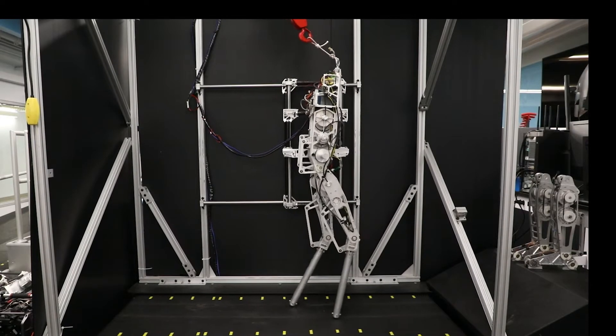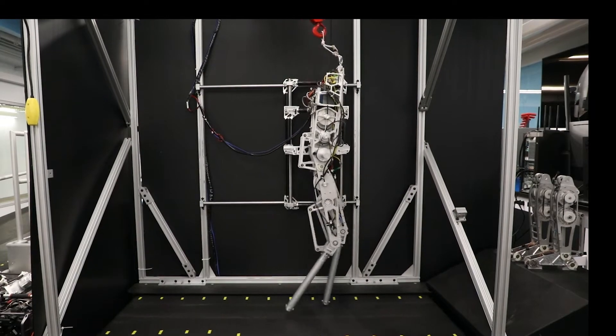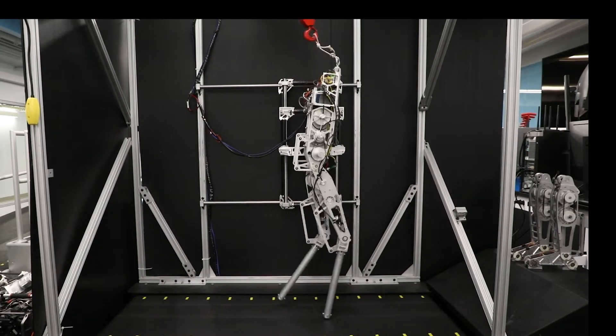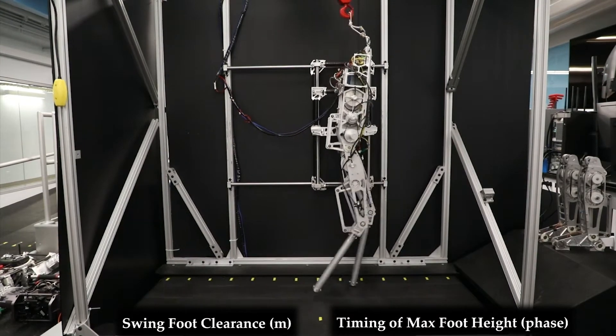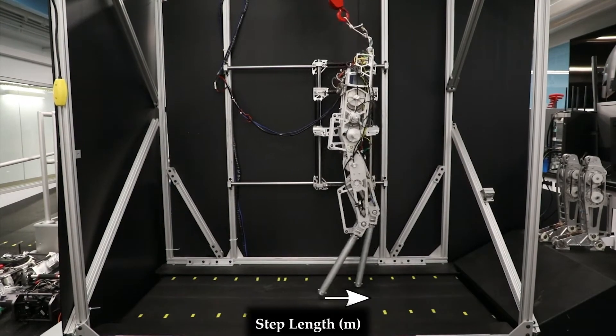We experimentally deploy this framework on the planar biped AMBER 3M to learn five essential constraints: average forward velocity, minimum foot clearance, the timing of this foot clearance, impact velocity, and step length.